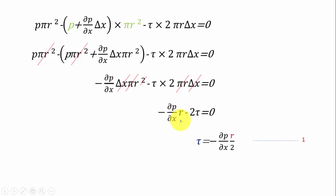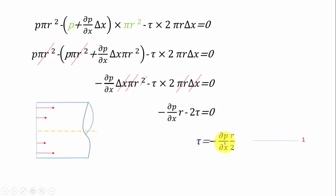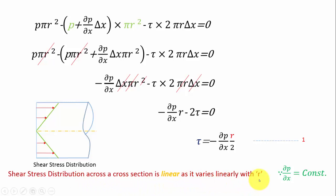Therefore, τ = −(∂p/∂x)·(r/2). This is the expression for shear stress acting in the pipeline. We can conclude that shear stress depends only on r, since ∂p/∂x is a constant and r is the only variable. So the shear stress is linearly related to radius r, and the shear stress distribution across the cross section is linear, varying linearly with r.